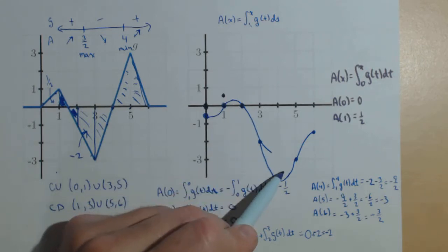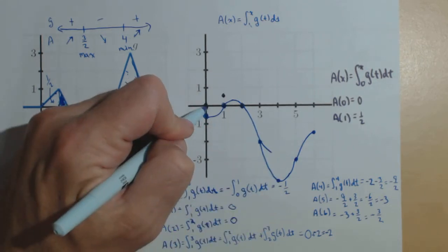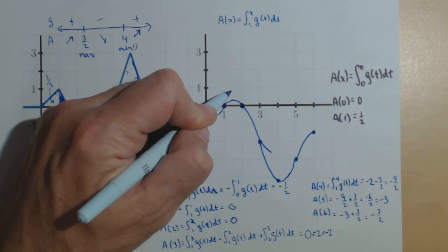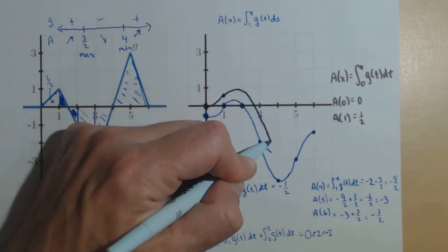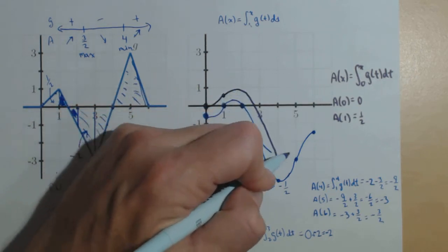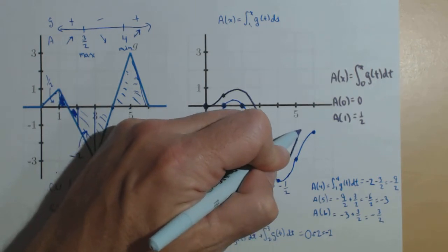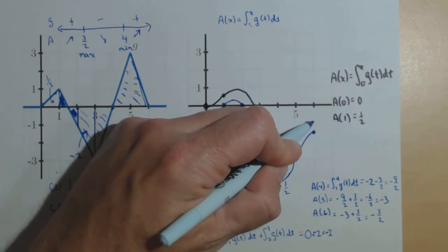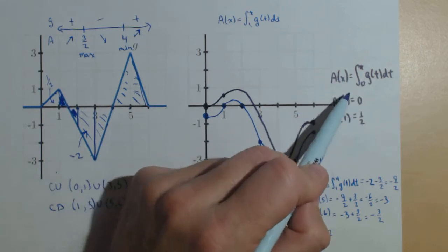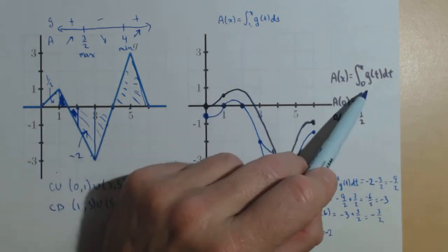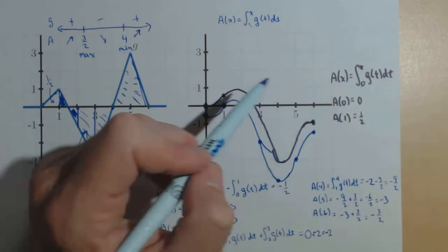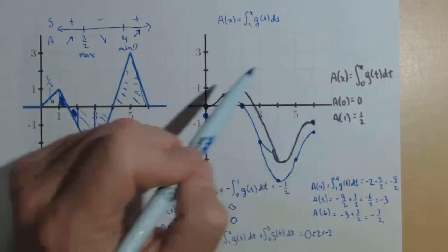And what's going to end up happening is all our values are going to move up by 1 half. And so, we get a vertical translation of our graph 1 half. Up by 1 half. Up by 1 half. So, this is kind of like our initial condition that we saw previously.